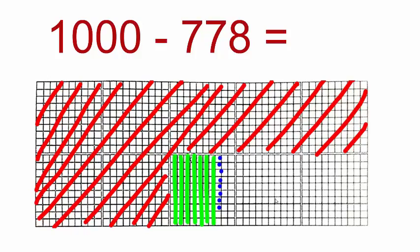The red portion represents 700, the green portion represents 70 and the blue dots represent 8 numbers.